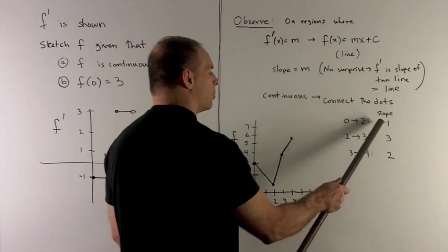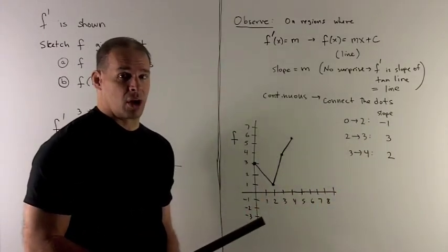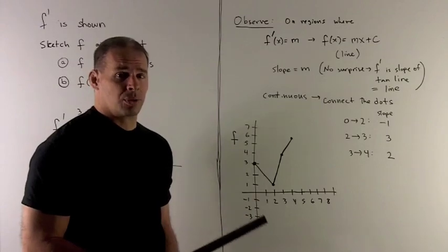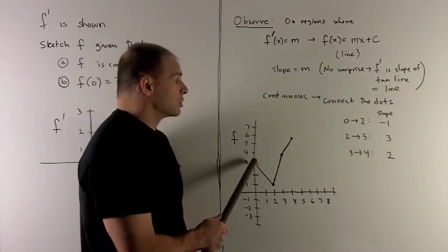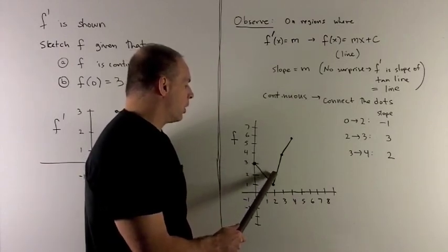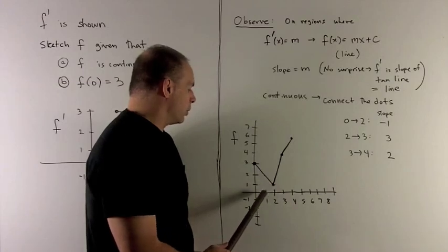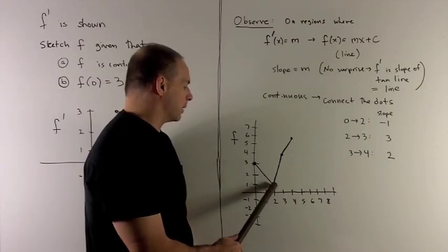So from 0 to 2, the slope is minus 1. So I just want to draw in the line segment that corresponds to that slope, going through my point 0, 3. So I'm going, slope minus 1 says if I go over by 1, I go down by 1. Go over by 1, go down by 1, and we wind up with the point 2 comma 1, draw the line segment in.